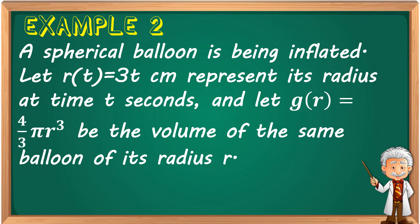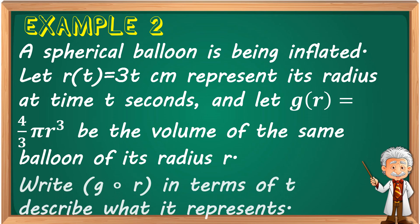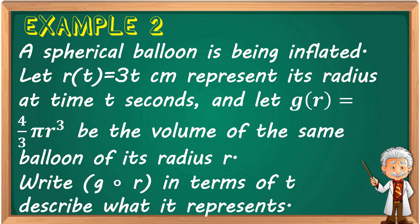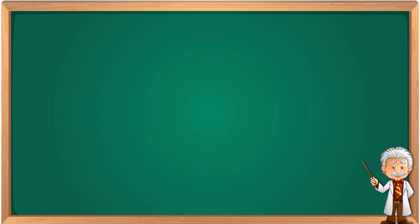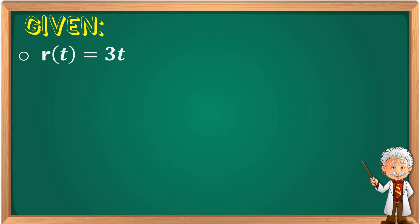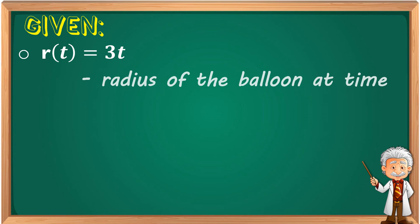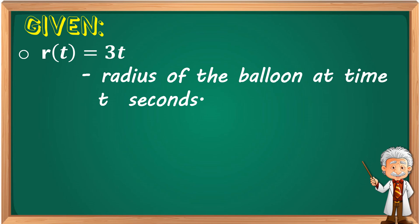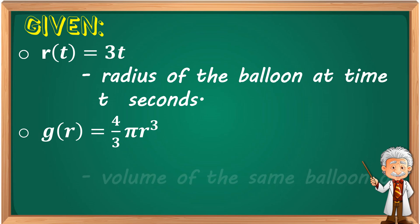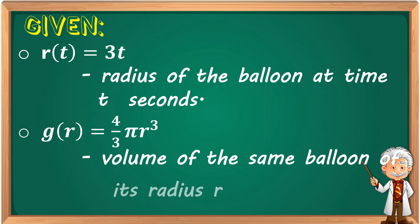Example 2: A spherical balloon is being inflated. Let r(t) = 3t centimeters represent its radius at time t seconds, and let g(r) = (4/3)πr³ be the volume of the same balloon at radius r. Write g∘r in terms of t and describe what it represents.